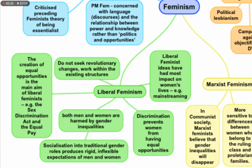Liberal feminists believe that socialization into traditional gender roles produces rigid, inflexible expectations of men and women, and that discrimination prevents women from having equal opportunities. Liberal feminist ideas have had the most impact on women's lives — for example, mainstreaming. If we talk in terms of tangible results, liberal feminists had the most success. They succeeded in getting women equal representation, the right to vote, the right to enfranchisement, the right to get women elected in parliament, equal jobs, and equal pay. Their agenda was not extremist, but they did succeed in achieving their objectives.